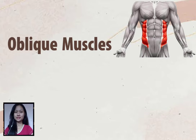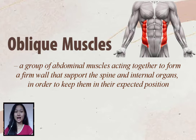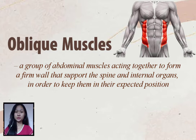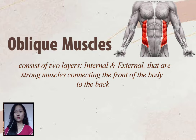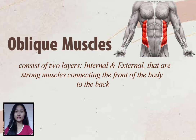Oblique muscles are a group of muscles of the abdomen acting together, forming a firm wall supporting the spine and internal organs, keeping them in their expected position. They consist of two layers — the internal and external — that are strong muscles connecting the front of the body to the back.